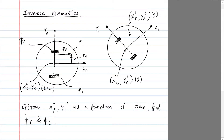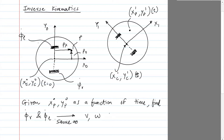We don't really talk about phi dot R and phi dot L directly — we talk in terms of v, which is the sum of p dot R and p dot L, and omega. So this is the same as finding v and omega, which is basically how fast you want to go in the forward direction and how much you want to turn. This is the definition of the inverse kinematics problem.